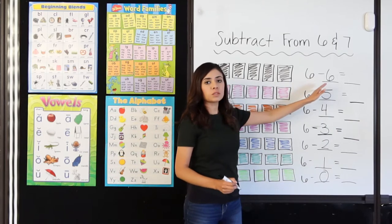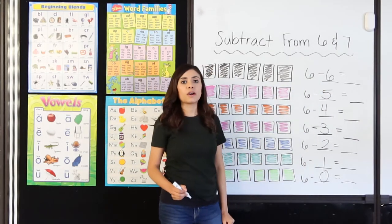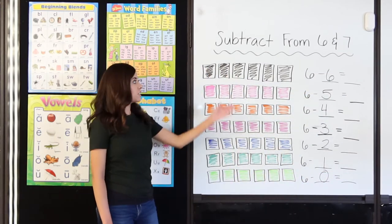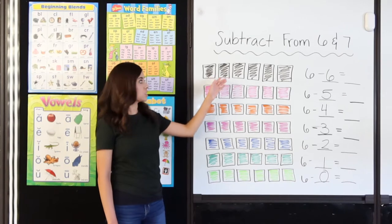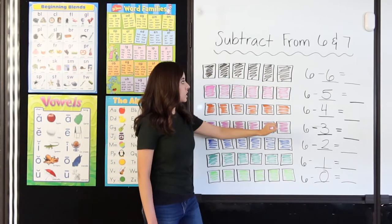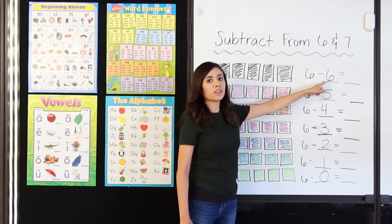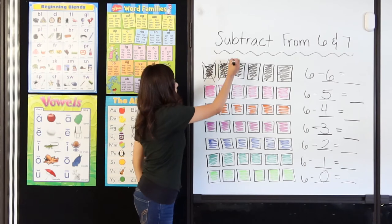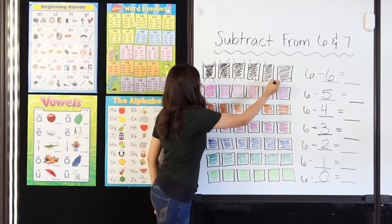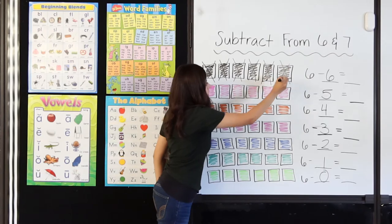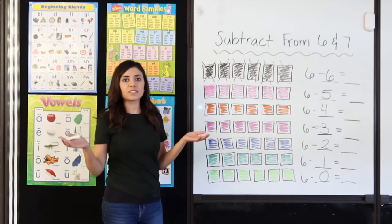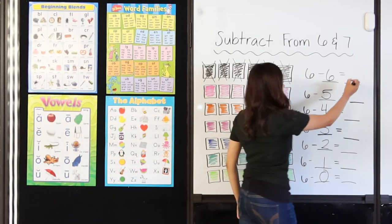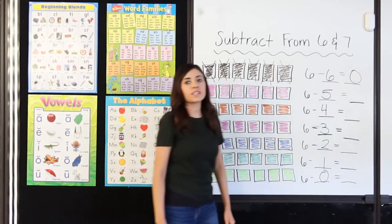So now I know what I am subtracting from 6 each time and now I just have to focus on the difference. I have 6 black squares — 1, 2, 3, 4, 5, 6. Let's go ahead and cross off the 6 that we are taking away: 1, 2, 3, 4, 5, 6. How many black squares do I have left? 0. 6 minus 6 equals 0. Nice job.